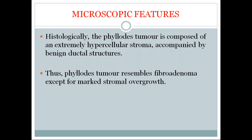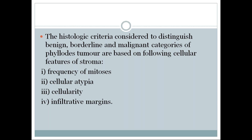What are the microscopic features? Histologically, the phyllodes tumor is composed of an extremely hypercellular stroma accompanied by benign ductal structures. Thus, phyllodes tumor resembles fibroadenoma except for marked stromal overgrowth — the key difference between fibroadenoma and phyllodes tumor. Histological criteria distinguish benign, borderline, and malignant categories of phyllodes tumor.